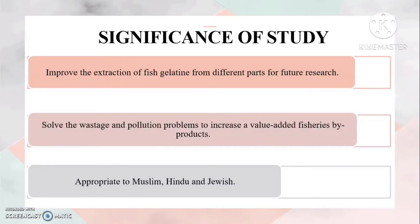Significance of study: to improve the extraction of fish gelatin from different parts for future research by solving wastage and pollution problems, and to increase value-added fisheries by-products that are appropriate to Muslim, Hindu, and Jewish communities.